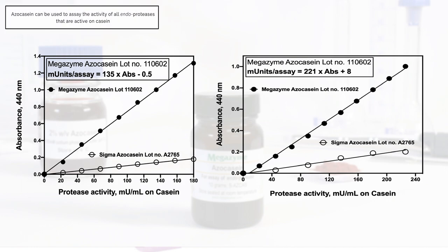Azo casein can be used to assay the activity of all endoproteases that are active on casein.